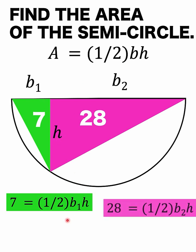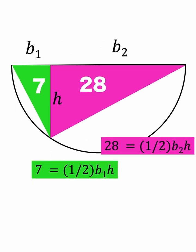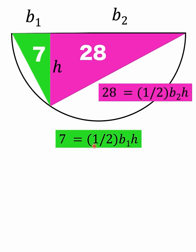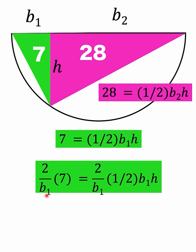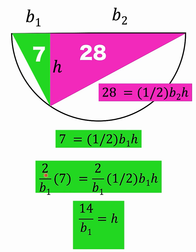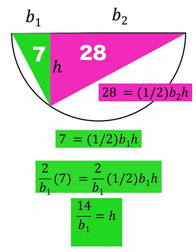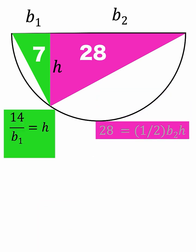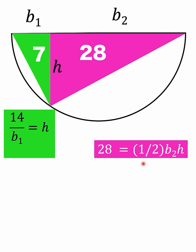Let's concentrate first on the green triangle and solve for the height. Multiplying both sides by 2 over b sub one, two times one half is one and b sub one over b sub one is one, so h = 14 / b₁. Now let's concentrate on the area of the pink right triangle.